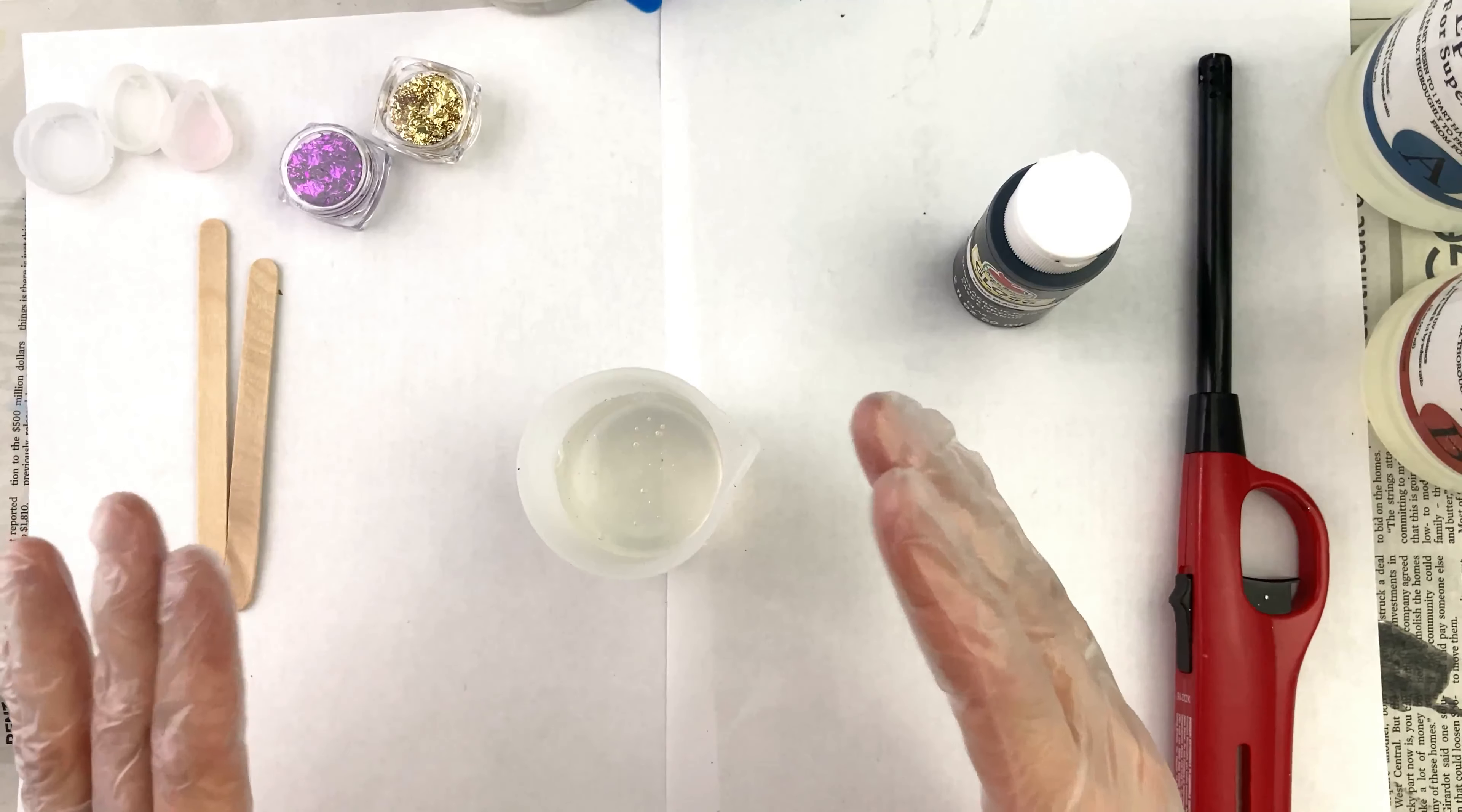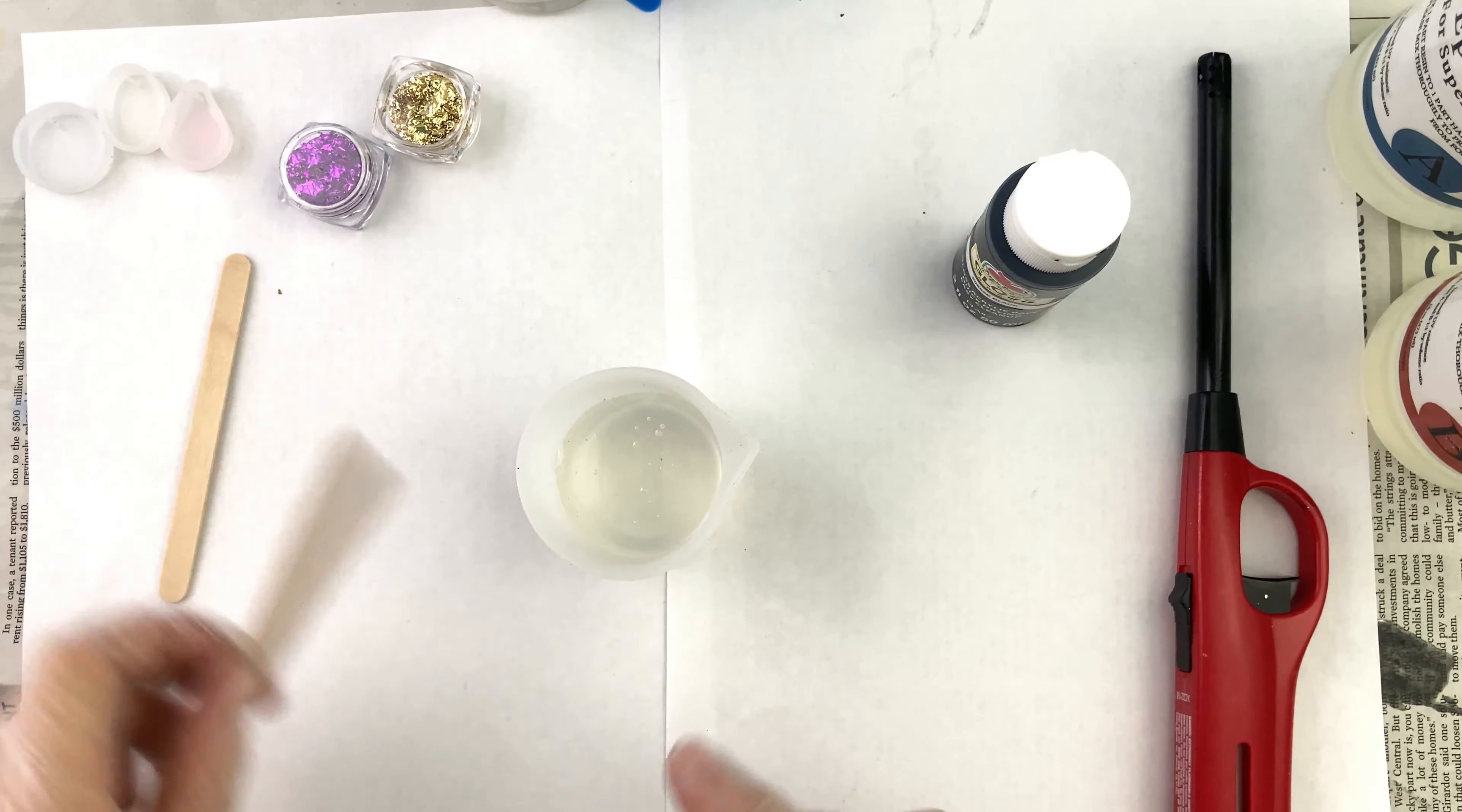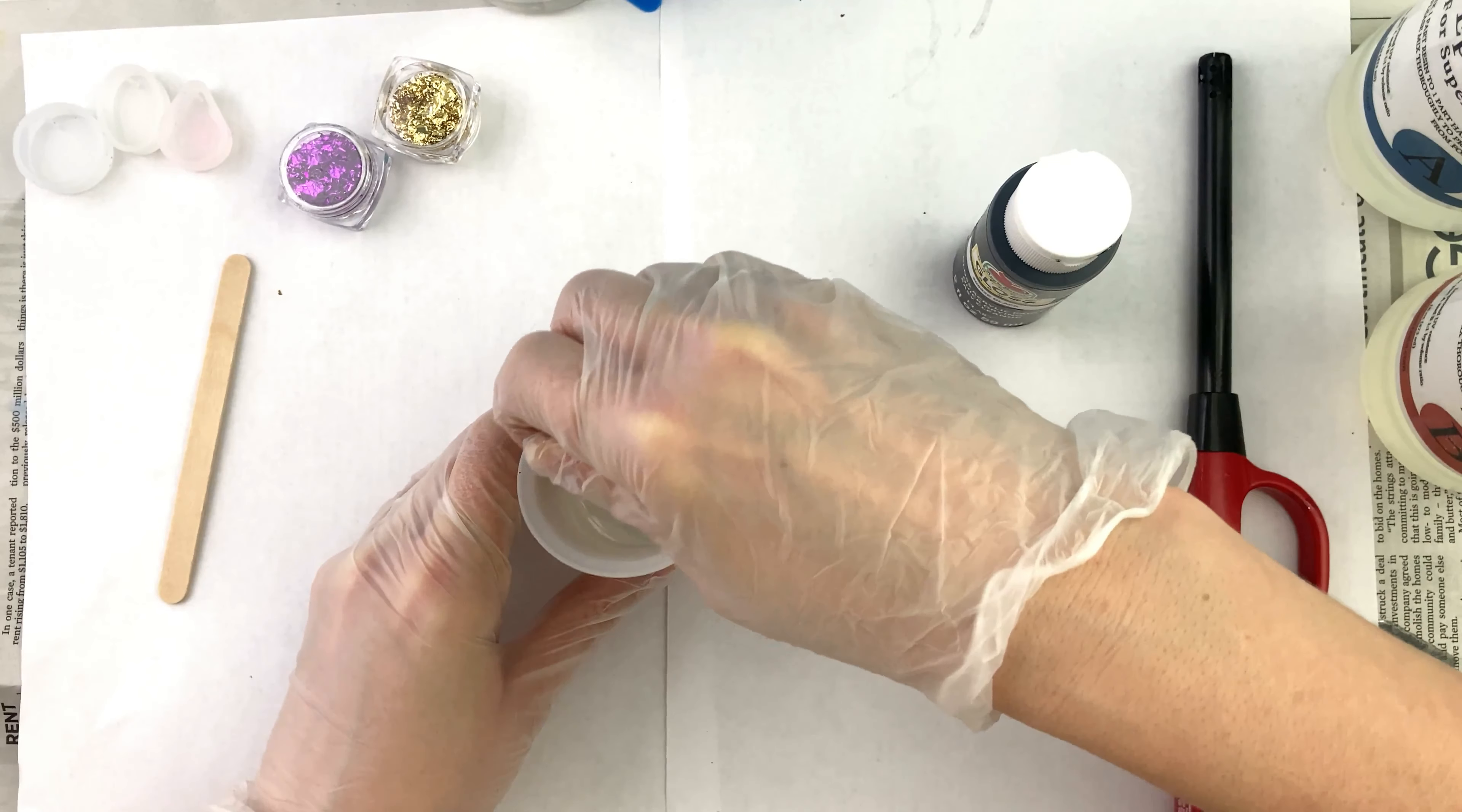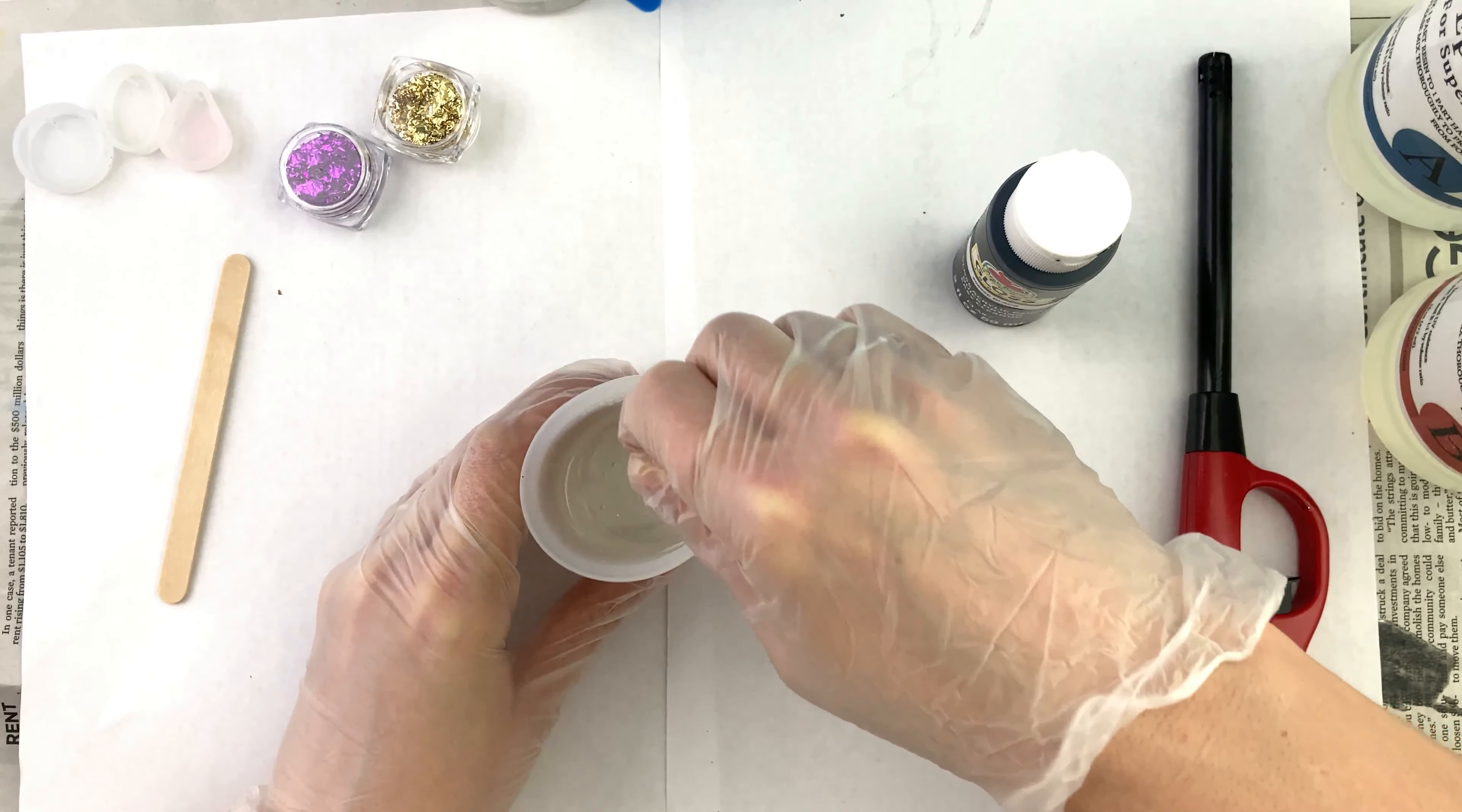B is so runny that it goes in quickly and doesn't need to have time to flatten out. So now I will not bore you, but now I am going to be stirring this very slowly. If you stir too quick, you'll make lots of bubbles. I'm going to be stirring this very slowly for the next minute to three minutes, mainly three minutes. You need to stir it that long so that the A and B mix together.